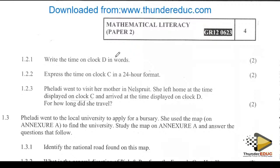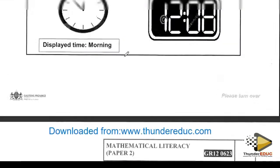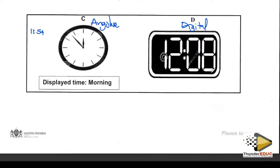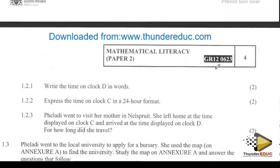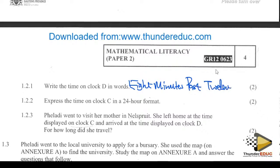Write down the time on clock D in words. Clock D is this one here, which is eight past 12. You write it down as: eight minutes past 12 in the afternoon.